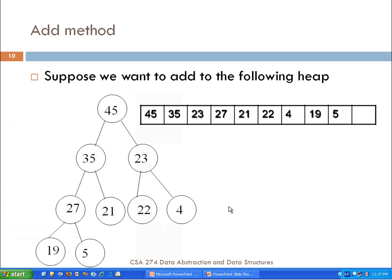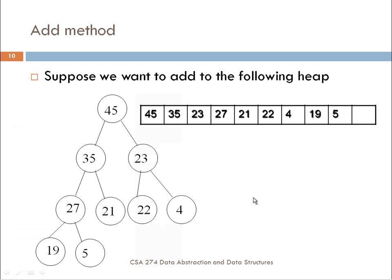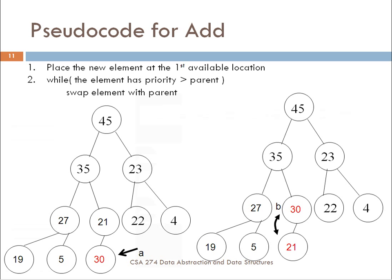In this episode, I want to follow up with the heap and discuss the add method as well as the remove method. Here is our heap represented as a tree as well as in the array. What I want to be able to do is add a number to this. The algorithm says you place the new element into the first available location in the tree, and we have to maintain the property that everything is leftmost as possible.